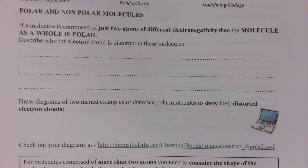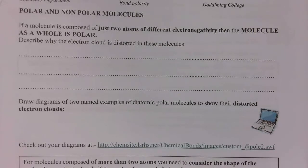If the molecule only has two atoms in it and those two atoms are different, then the molecule as a whole will always be polar. The reason for this is if you have two atoms with different electronegativities, the more electronegative one will attract the shared pair of electrons more. This will distort the electron cloud and you will have one side of the molecule being delta positive and one being delta negative.